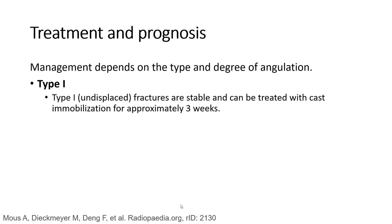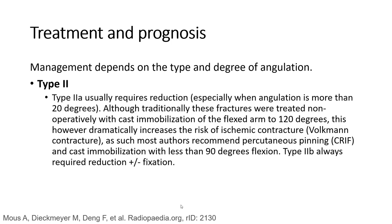Management by type: Type 1 fractures are stable and can be treated with cast immobilization for approximately three weeks. Type 2A usually requires reduction. Although traditionally these fractures were treated non-operatively with cast immobilization of the flexed arm to 120 degrees, this was shown to dramatically increase the risk of ischemic contracture. It is now recommended to use percutaneous pinning and cast immobilization with less than 90 degrees of flexion.